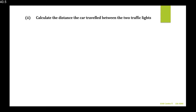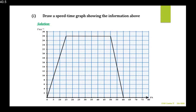Part 2: calculate the distance traveled between the two traffic lights. The entire graph represents the journey between those two traffic lights — from the first light at the origin to the second light at 60 seconds. The formula for calculating distance traveled is the same as calculating the area under the graph.